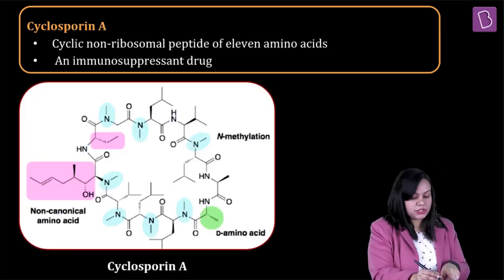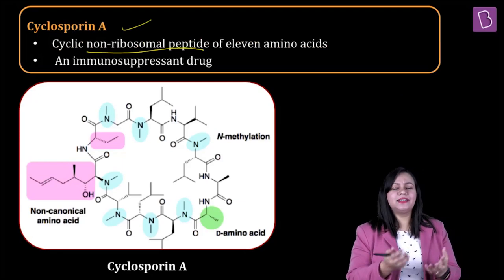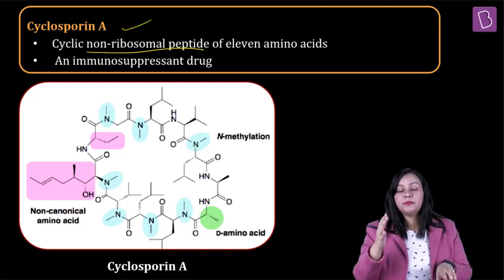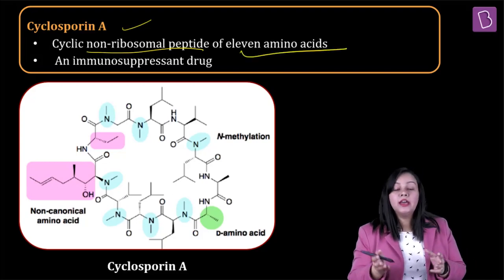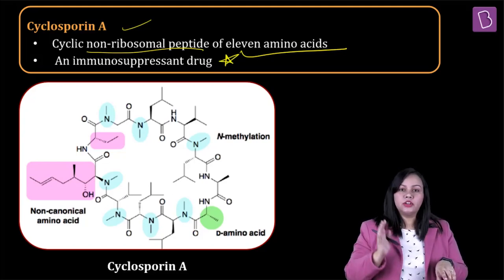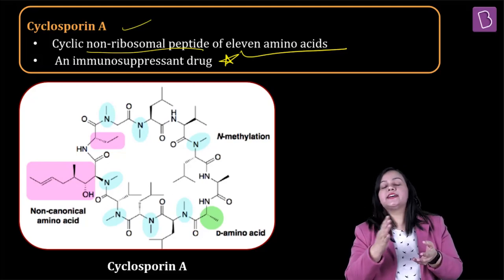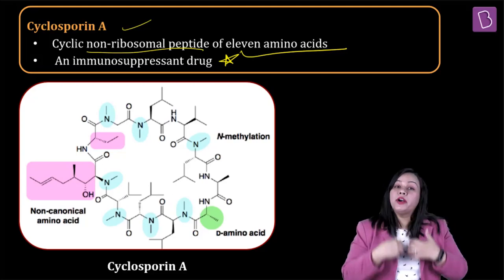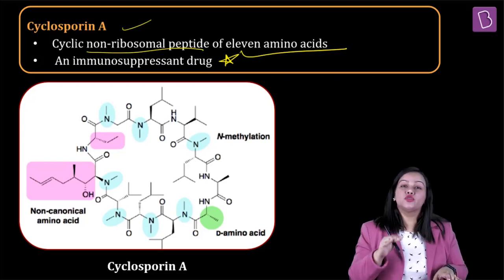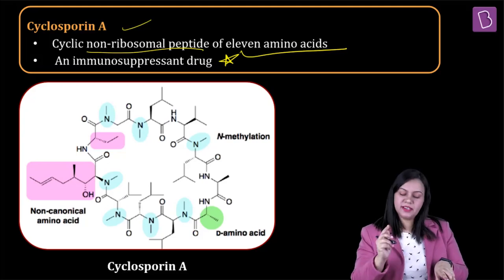Then we go on to the next incorrect option, cyclosporin A. Cyclosporin A is a non-ribosomal peptide — these are not dependent on the cellular and ribosomal machinery for protein synthesis. It's a cyclic non-ribosomal peptide about 11 amino acids long. Most importantly, it's an immunosuppressant drug given to people who have undergone organ transplantation, so that their body accepts the transplanted organ as self. It's not a blood cholesterol lowering agent.